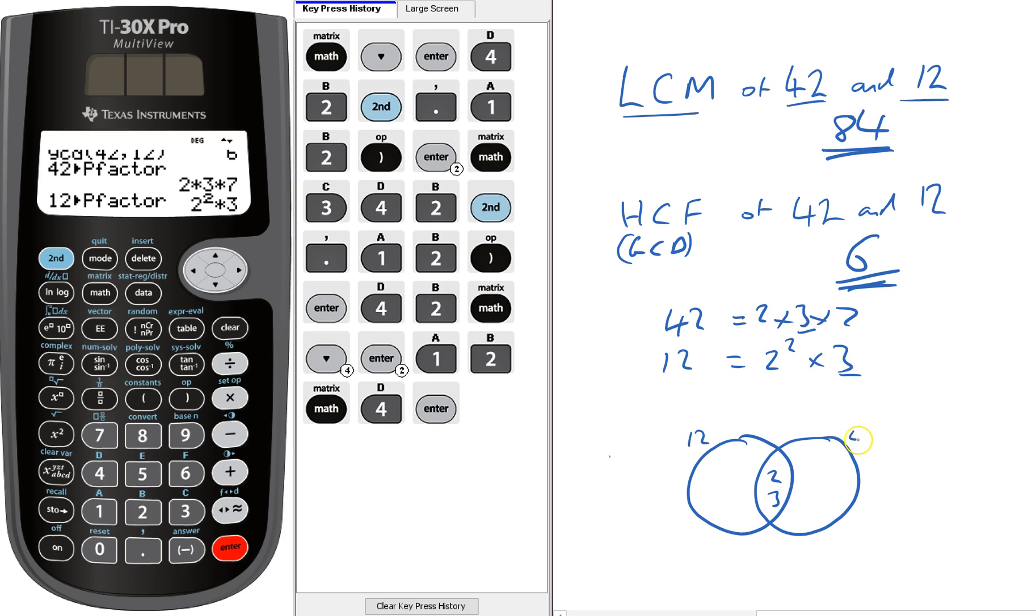What's 12 got left and 42 got left? 12 has got a 2 left there, and 42 has got the 7 left.